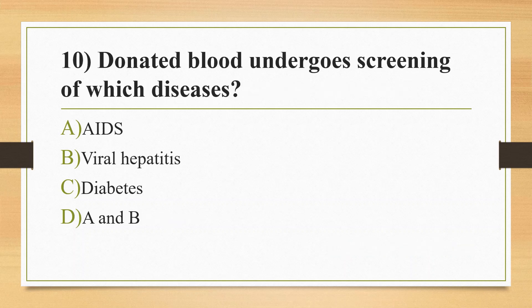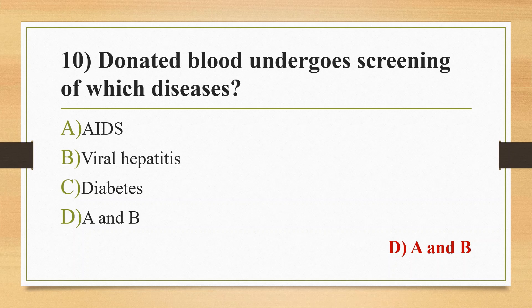Tenth question: donated blood undergoes screening for which diseases? Option A: AIDS. Option B: viral hepatitis. Option C: diabetes. Option D: A and B. The answer is option D — AIDS and viral hepatitis. These are transfusion-transmitted diseases. AIDS and viral hepatitis like hepatitis B, hepatitis C, syphilis, and malaria are the most common. Mainly viruses and parasites are the causative agents.